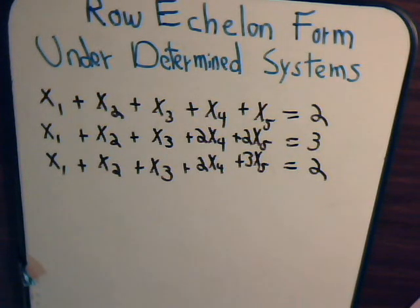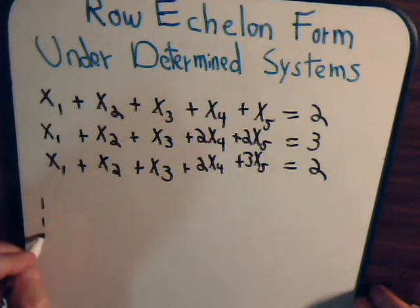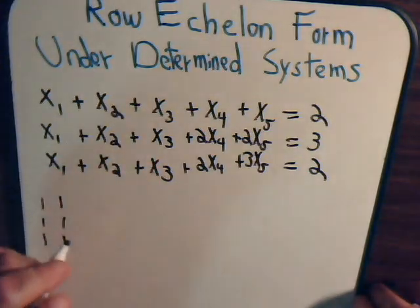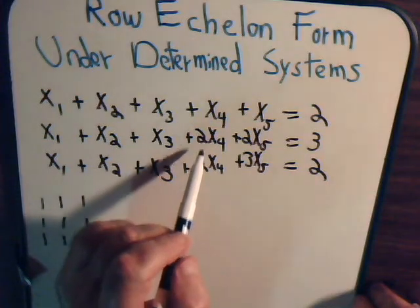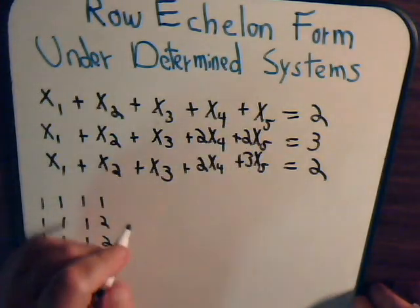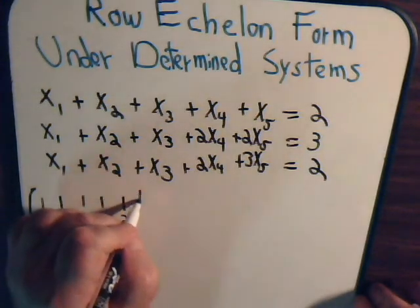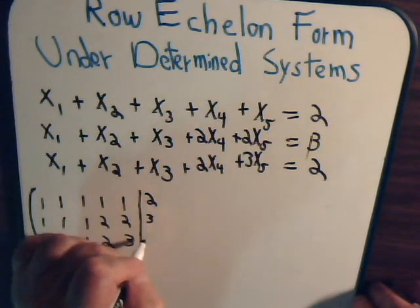Let's set up the augmented matrix and grind through the numbers to see what happens. The matrix is: rows all begin with 1, 1, 1 for the first three columns. The fourth column entries are 1, 2, 2, and the fifth column entries are 1, 2, 3. The augmented column on the right is 2, 3, 2.